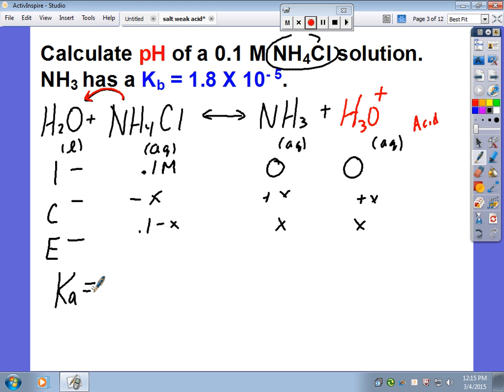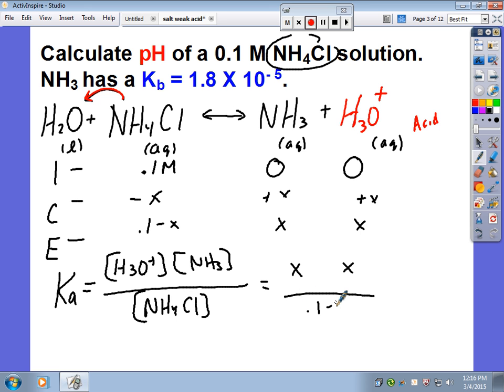And if I write my KA, why am I writing KA? Because I have an acid, right? I'm going to write H3O plus, or just H plus if you want to. NH3, and NH4Cl. And I'm going to go ahead and plug my values in. This is X. This is X. This is 0.1 minus X.